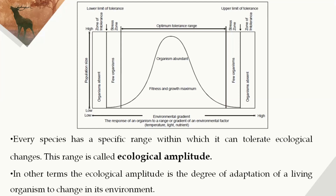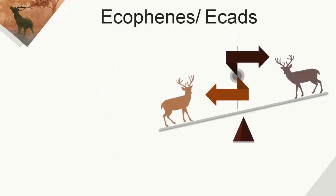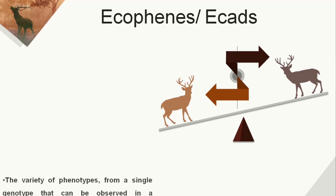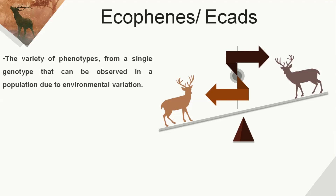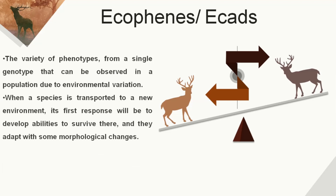In other terms, ecological amplitude is the degree of adaptation of a living organism to change in its environment. Based on the response, species are categorized into different subtypes. One is ecophenes. Suppose a man travels from a colder region to a warmer region — the very first response is the darkening of the skin because of the production of melanin. But it is not permanent; when he goes back to the colder condition, the melanin secretion is reduced and he regains his original skin color. The variety of phenotypes from a single genotype observed in a population due to environmental variation is called ecophenes.